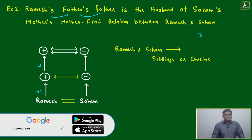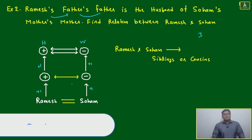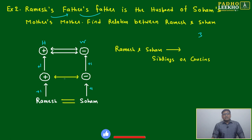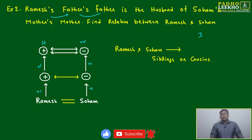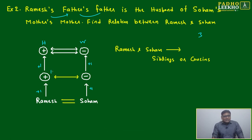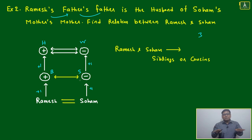Soham's mother's mother — again one generation, then another generation. So they are husband and wife. Now here you can make a mistake: are Ramesh and Soham brother-sister or brother-brother? No, they are not brother-brother. If they are just one generation apart, they would be brother and sister, or two kids — brother-sister, brother-brother, or sister-sister.